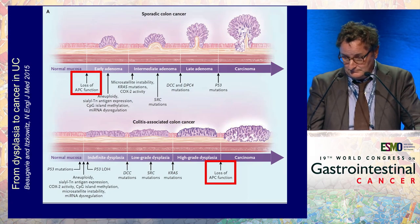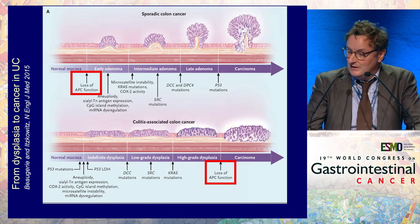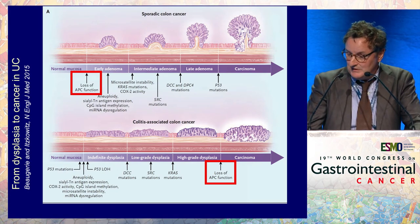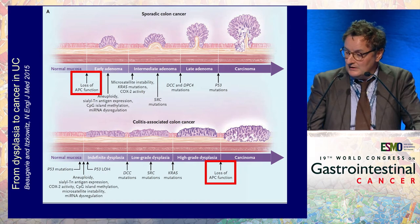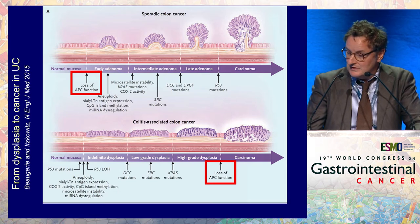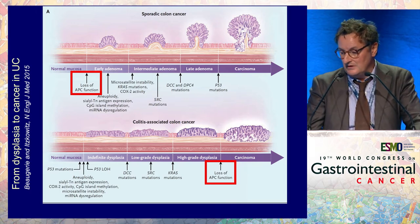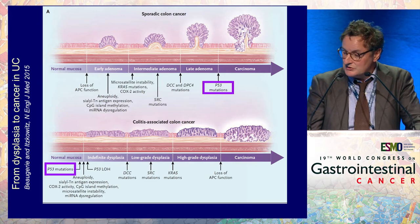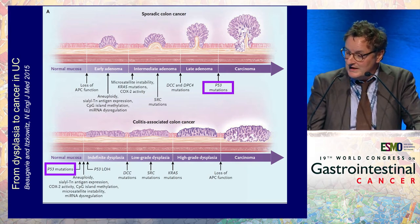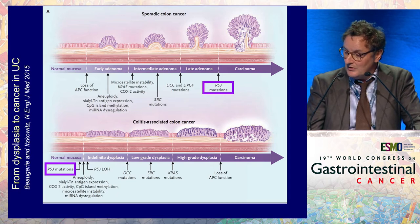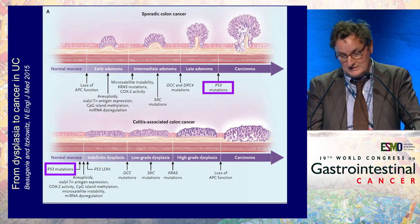There are molecular differences between sporadic colon cancer and colitis-associated colon cancer. Loss of APC function is an early event in sporadic colon cancer, whereas it is a late event when it occurs in colitis-associated colon cancer. The reverse is true for p53 mutations, which occur at a late stage in sporadic colon cancer but are an early event in colitis-associated colon cancer.